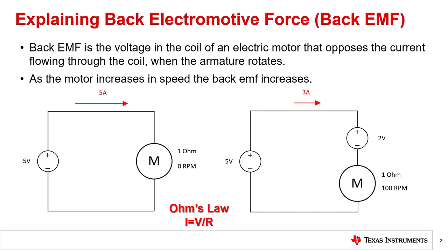Here we can see a motor connected to a 5 volt voltage source. As soon as the circuit is closed, the current through the motor will begin to rise quickly, up to 5 amps. However, as the motor spins, the back EMF will begin to develop, which will oppose the input voltage, leading to a current of 3 amps. For schematic purposes, we can represent this back EMF as an opposite voltage source that only exists when the motor is spinning. The current and voltage source can be calculated by using Ohm's law.